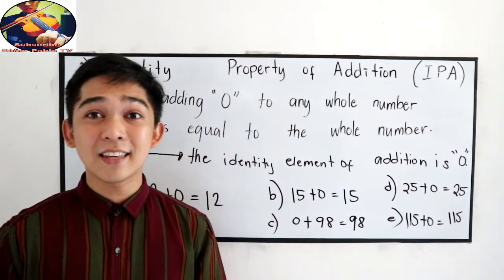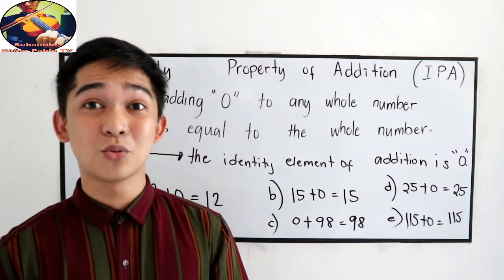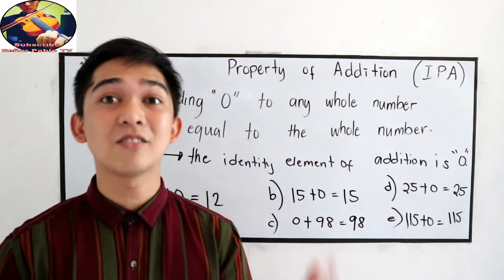That is the Identity Property of Addition. Any number, if you add it to zero, that is equal to that number.